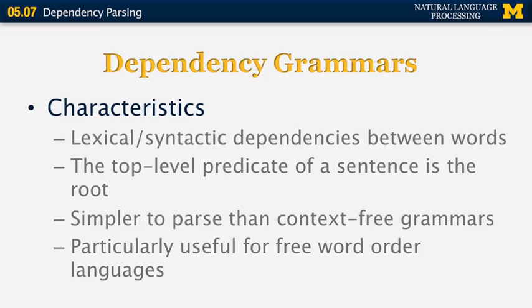What is a dependency grammar? It's a grammar that captures lexical and syntactic dependencies between words. The top-level predicate of the sentence becomes the root of the parse tree. Dependency grammars are much simpler to parse than context-free grammars, and they're very useful for languages with free word order, such as Czech and Latin.